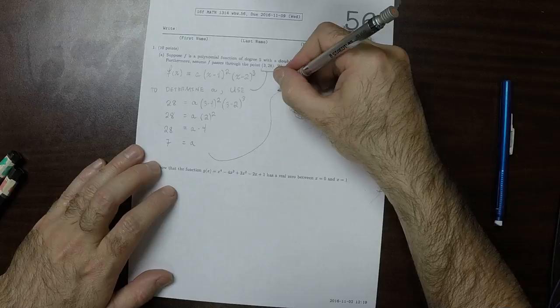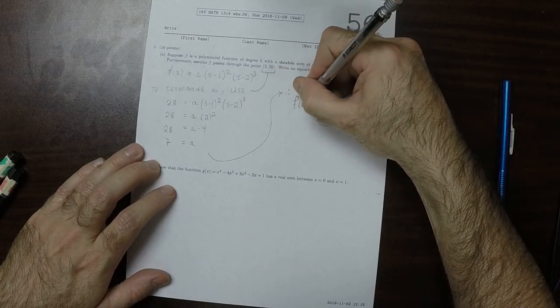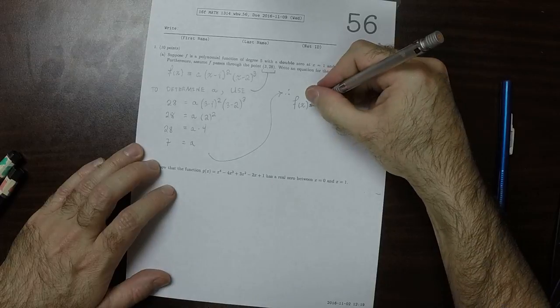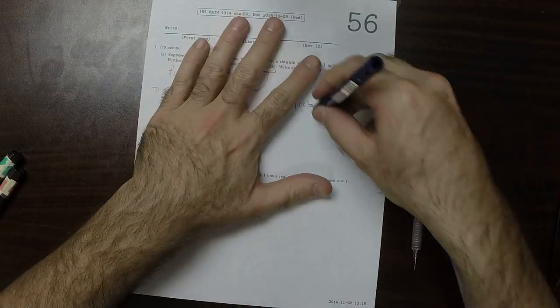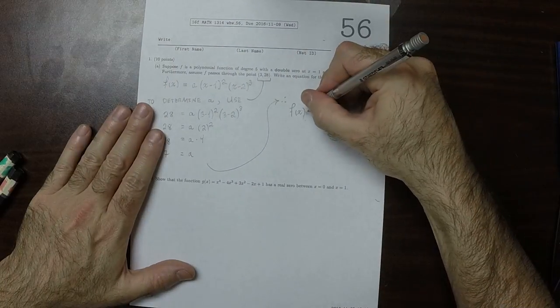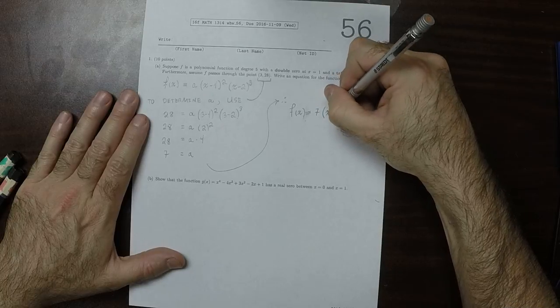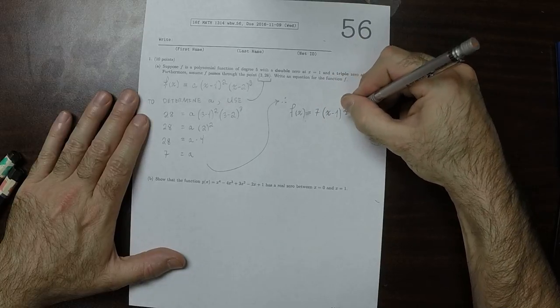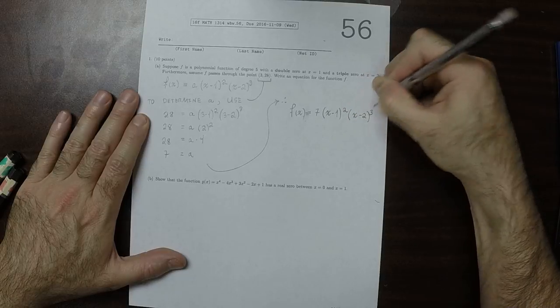And therefore, f of x is 7 multiplied by x minus 1 squared times x minus 2 cubed.